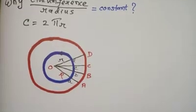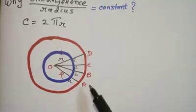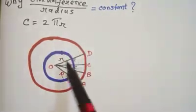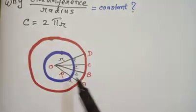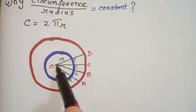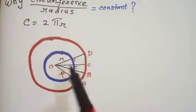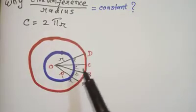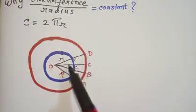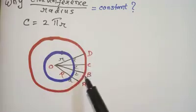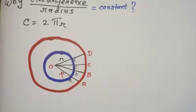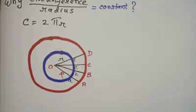For that, I have drawn two concentric circles. The red one is the bigger one and the blue one is the smaller one. I have taken a point O and drawn four equidistant lines, which you can call arcs, all equal to each other. These are labeled ABCD for the red circle and abcd for the smaller circle.